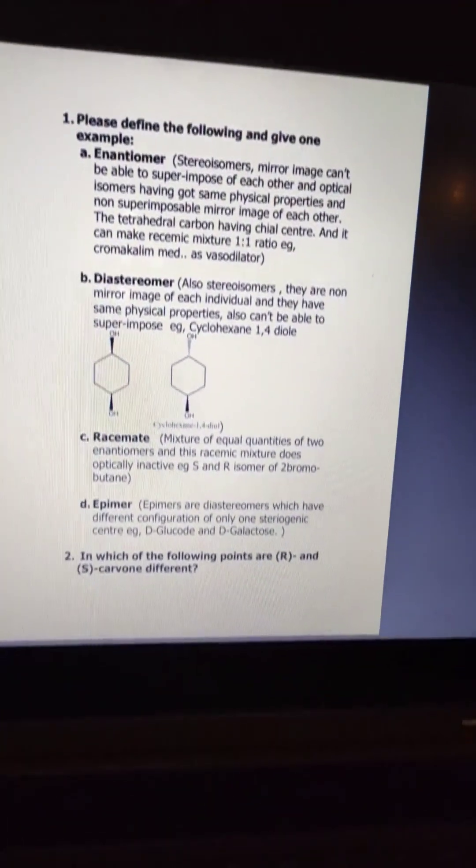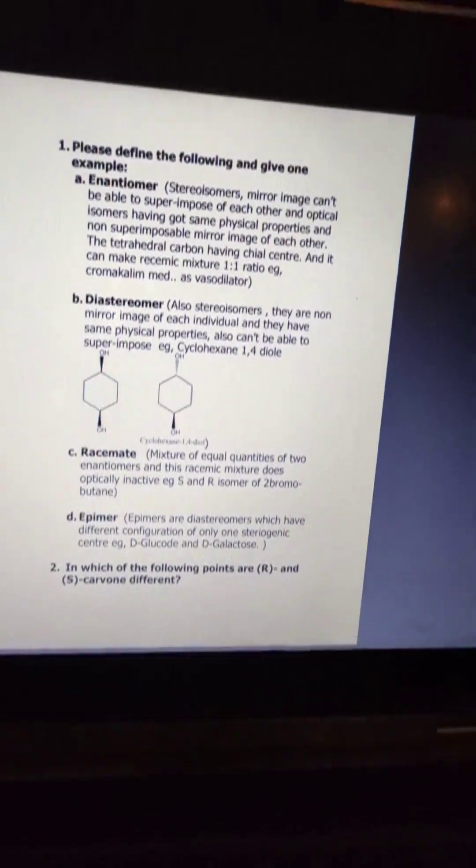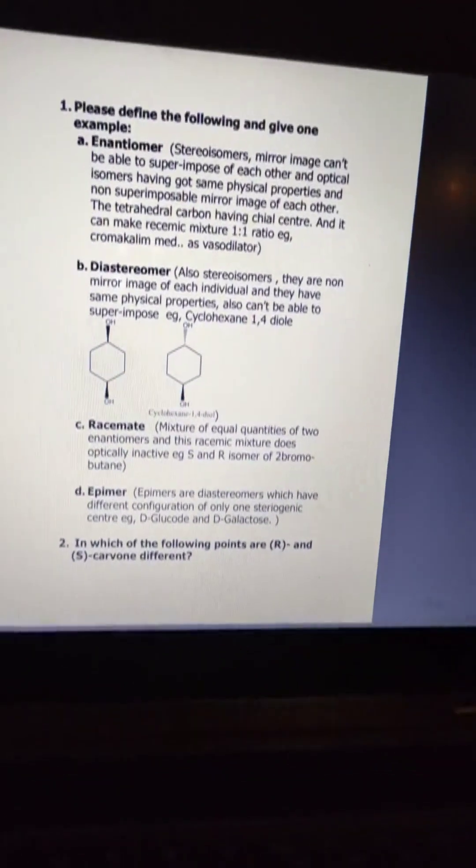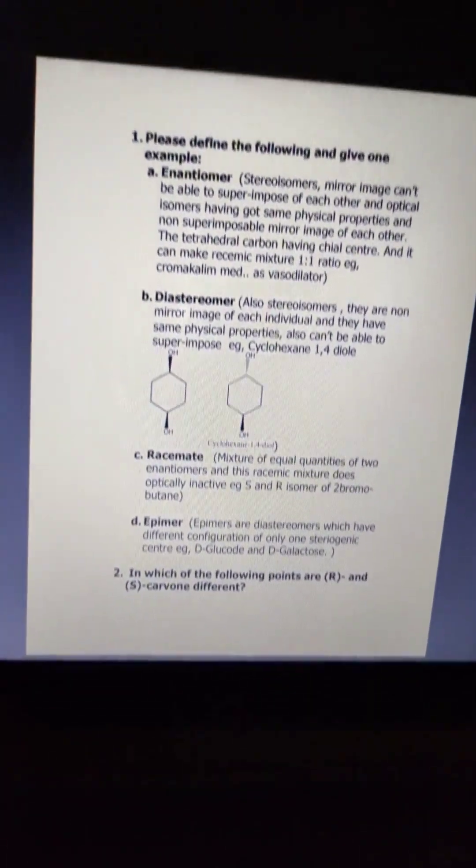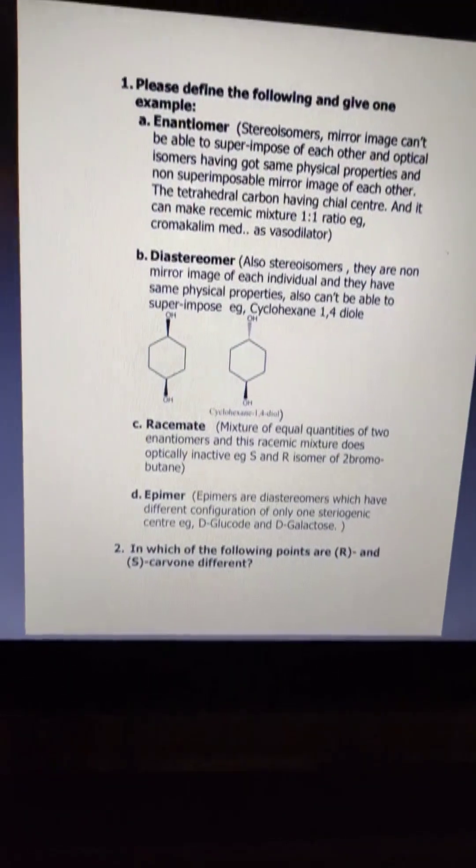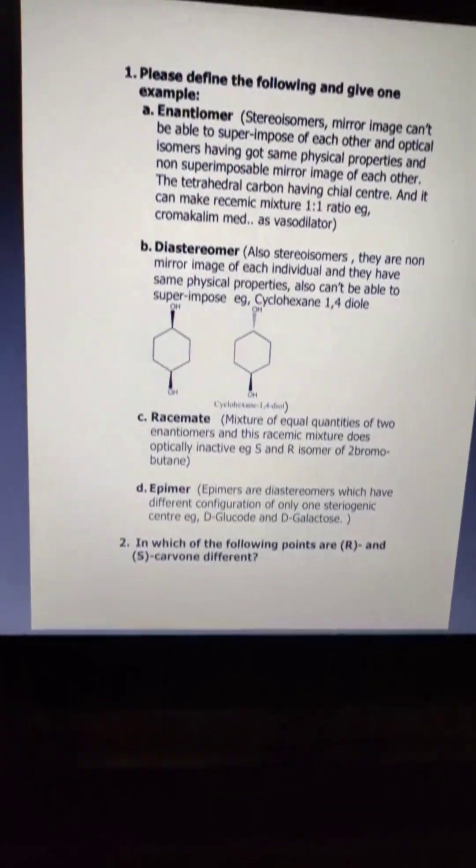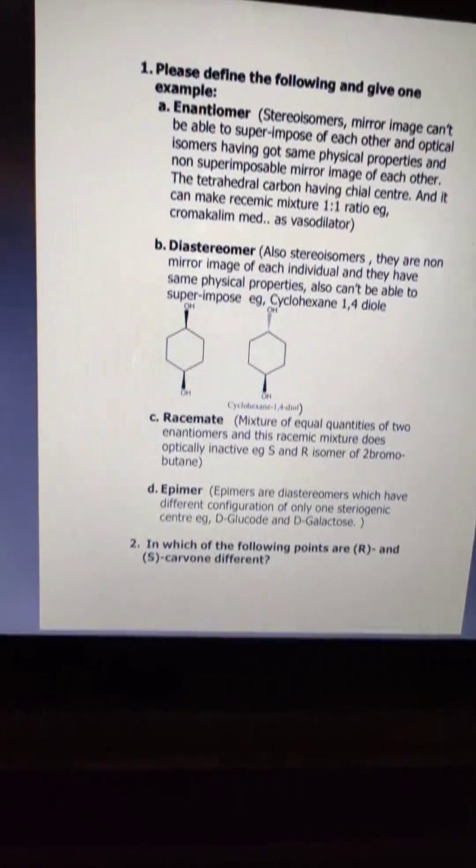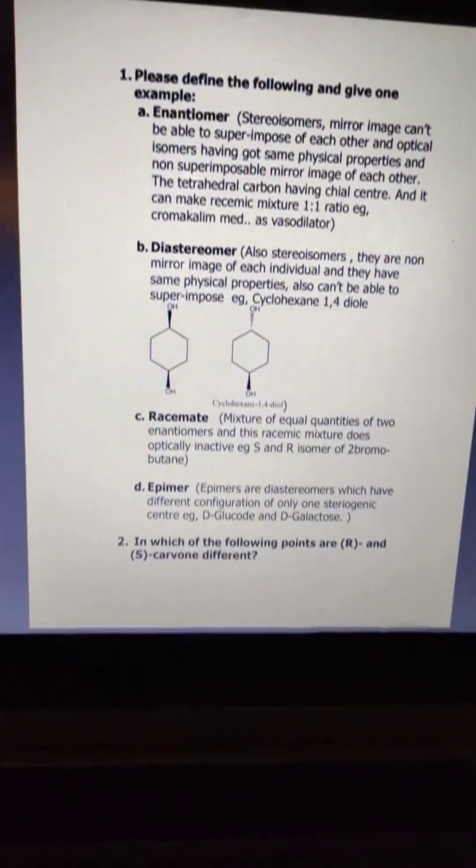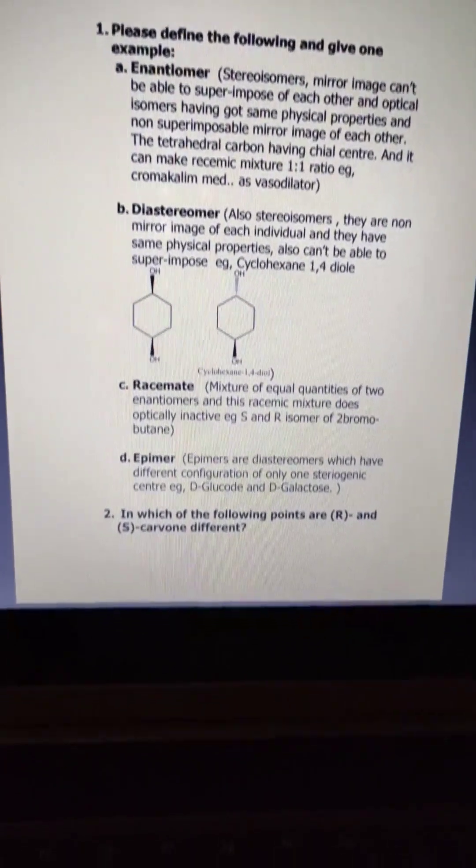An example is here, the diol, cyclohexane diol. And this is the difference between them and after that we can discuss about the chiral center and chiral carbon.